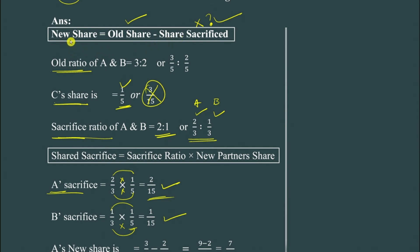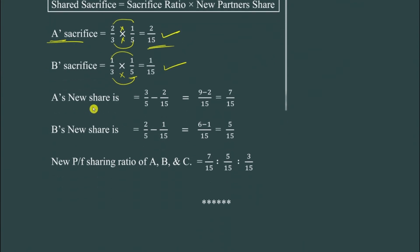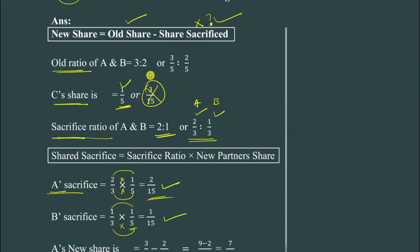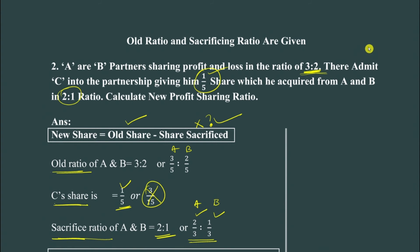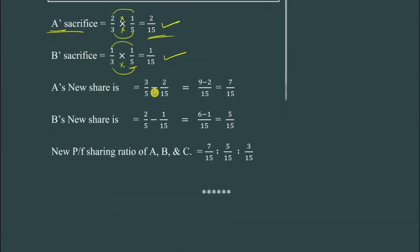Now find the new share using the formula: new share = old share minus share sacrificed. A's old share is 3/5 and B's old share is 2/5. So we calculate: A's new share = 3/5 minus 2/15, and B's new share = 2/5 minus 1/15.